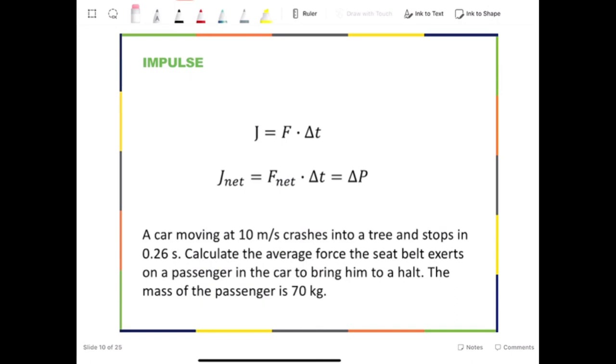Recall Newton's second law in the form of momentum. The net force times the time interval is equal to the change in the total momentum. In other words, the net impulse is equal to the change in the momentum of an object or a system.